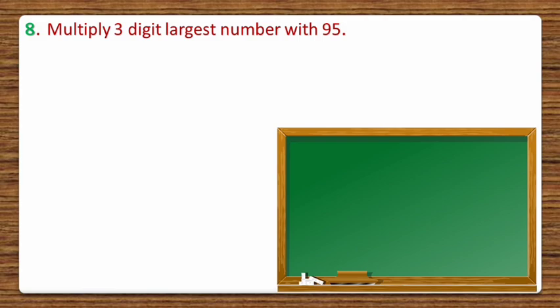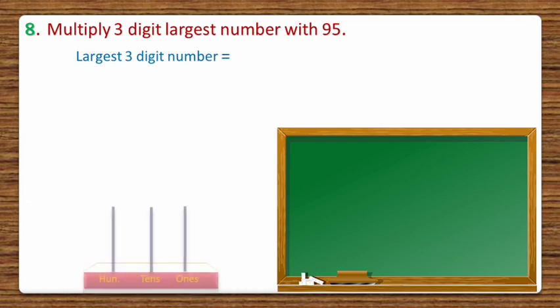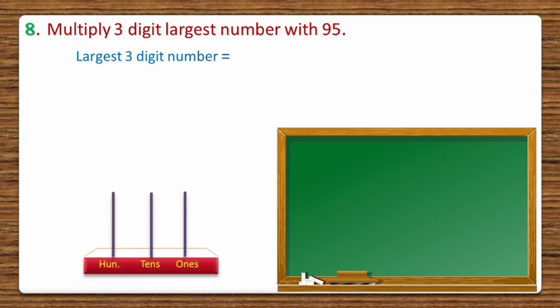First of all, let's learn how to make the largest 3-digit number. For that, let's take an abacus with 3 sticks — for 1s, 10s, and 100s.